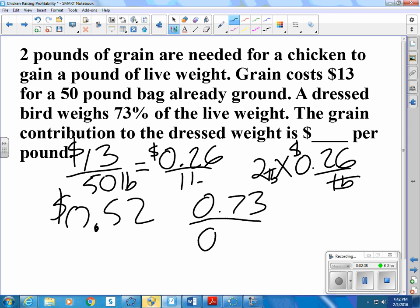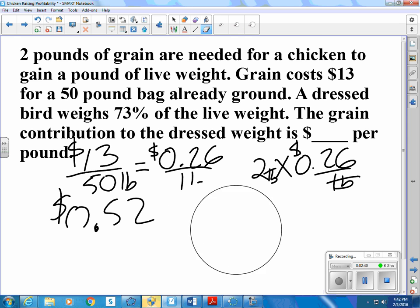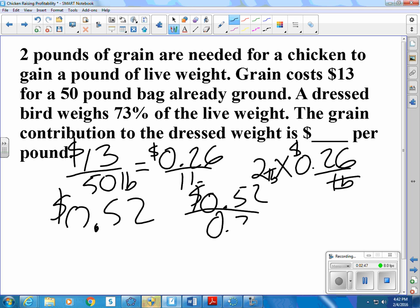And we'll divide that by 0. Sorry, the other way around. 52 cents for 0.73 pounds of dressed meat. So if we want to know price per pound, we'll go ahead and divide. 52 cents divide by 0.73. That turns out to be 71 cents per pound of dressed meat.